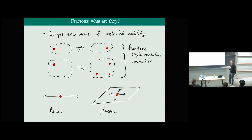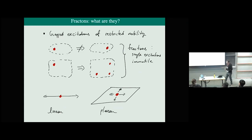The sort of thing that might happen is that it is possible to destroy this excitation here and create three excitations at the corners of a box. That happens precisely in the x-cube model introduced in the morning talk. When that happens, an individual isolated excitation is actually immobile, but there's more complicated cooperative mobility where it can split into three. An excitation with this sort of mobility is what we call a fracton.